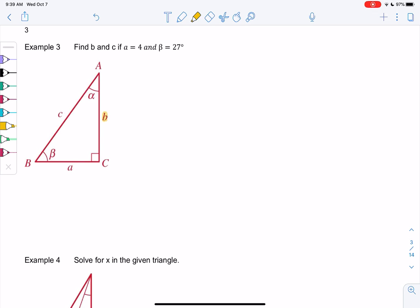All right, we're in 5-2, we're solving right triangles, so we're going to find B and C, and we know that A is 4, so this bottom side is 4, and this angle down here is 27. So let's go ahead and solve.